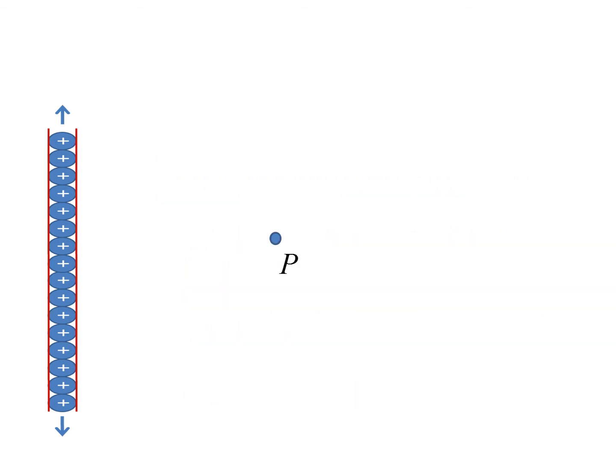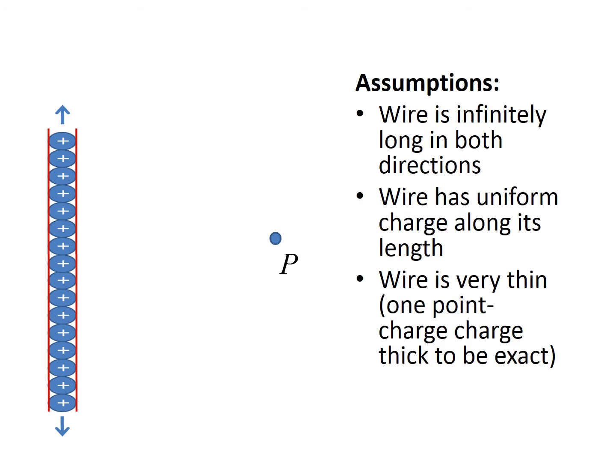Here is the wire in question — our infinite wire — with a single layer of point charges. We want to know: what is the electric field at point P due to this wire? We assume the wire is infinitely long in both directions and has uniform charge spread across its entire length, so any two equal-length segments have the exact same number of charges. We also assume the wire is thin to the point where it is one charge thick.